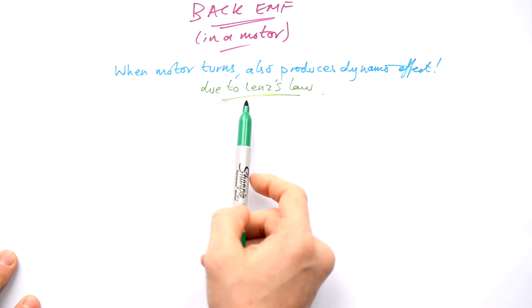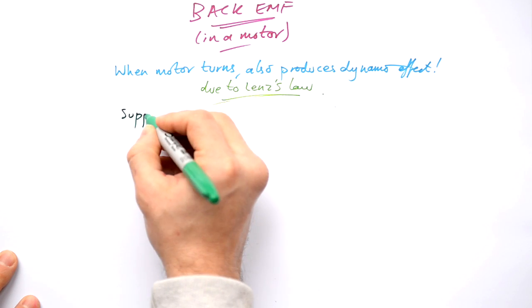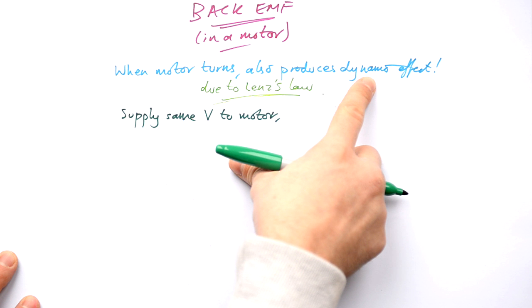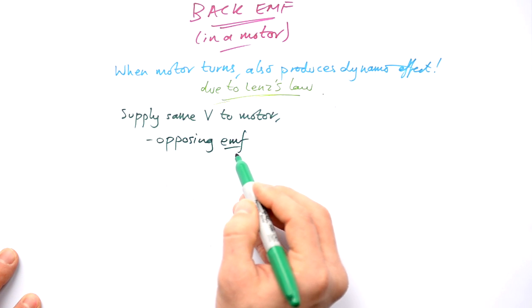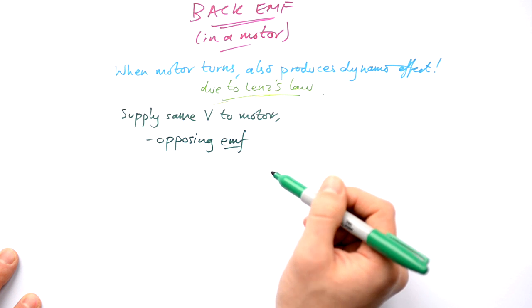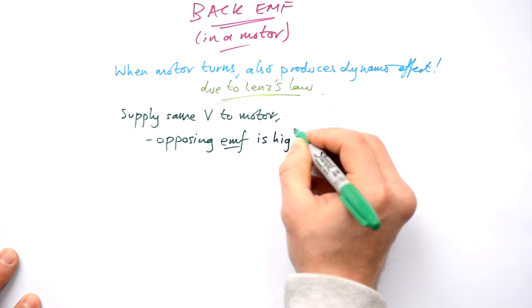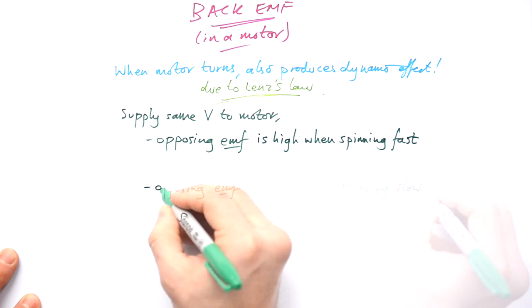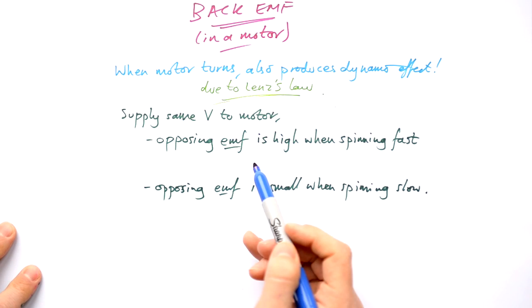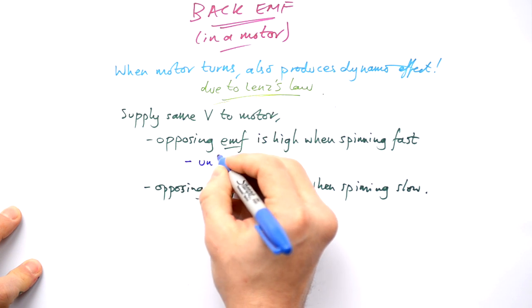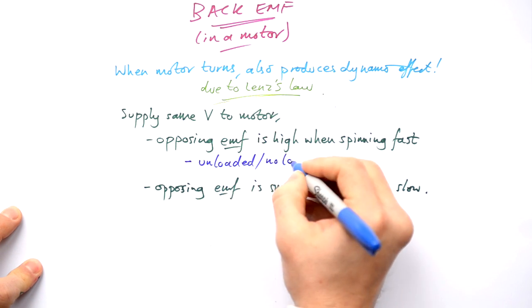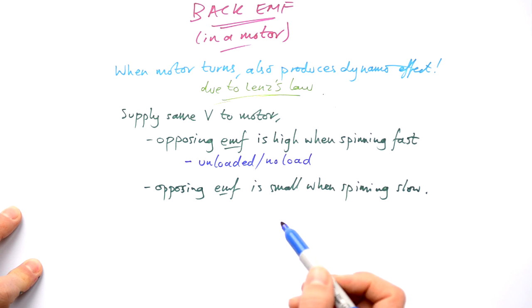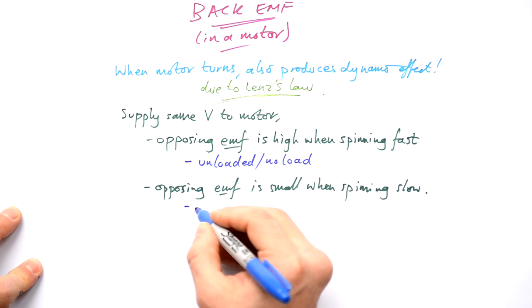So is there a way to mitigate this? Yes there is. If we supply the same voltage to a motor, at what point do we have a small dynamo effect? At what point do we have a big dynamo effect? The opposing EMF, that is the EMF trying to push back in the other direction to the voltage supplied to the motor, is going to be high when the motor is spinning fast, but it's going to be small when it's spinning slow. When do we get a motor spinning fast? When it's unloaded, no load. In other words, when you have a motor that's not connected to anything, it's just spinning by itself. The opposing EMF or the back EMF is small when spinning slow, when it's under heavy load.